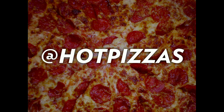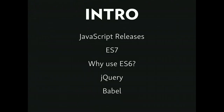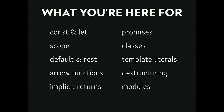So let's go over what we're going to talk about. We're going to do a little bit of an intro, check out the history of JavaScript releases. We're going to cover ES7 before we even touch ES6 — there's a reason. We're going to ask ourselves why even use ES6, touch on jQuery, Babel, and then dive into const/let, scope, default and rest parameters, arrow functions, implicit returns, promises, classes, template literals, destructuring, and the awesomeness of JavaScript modules.